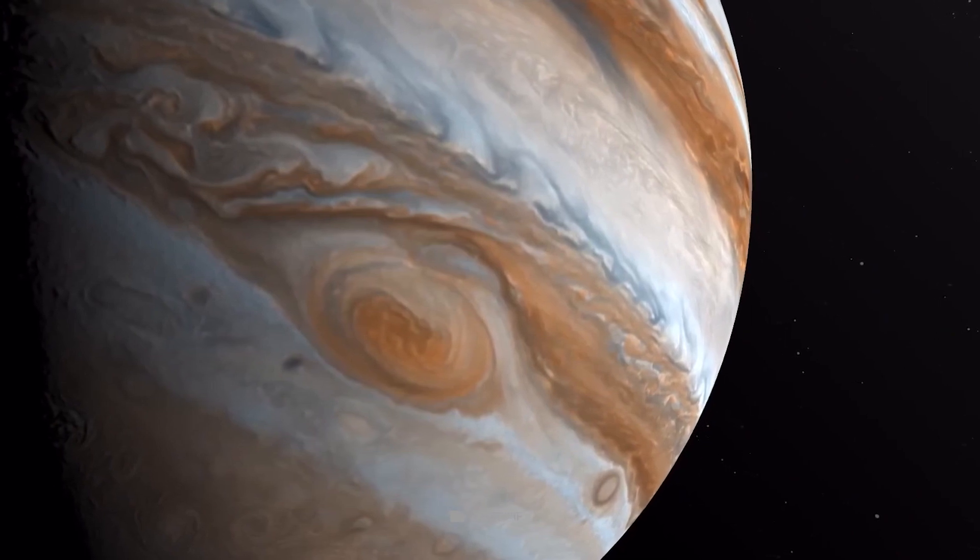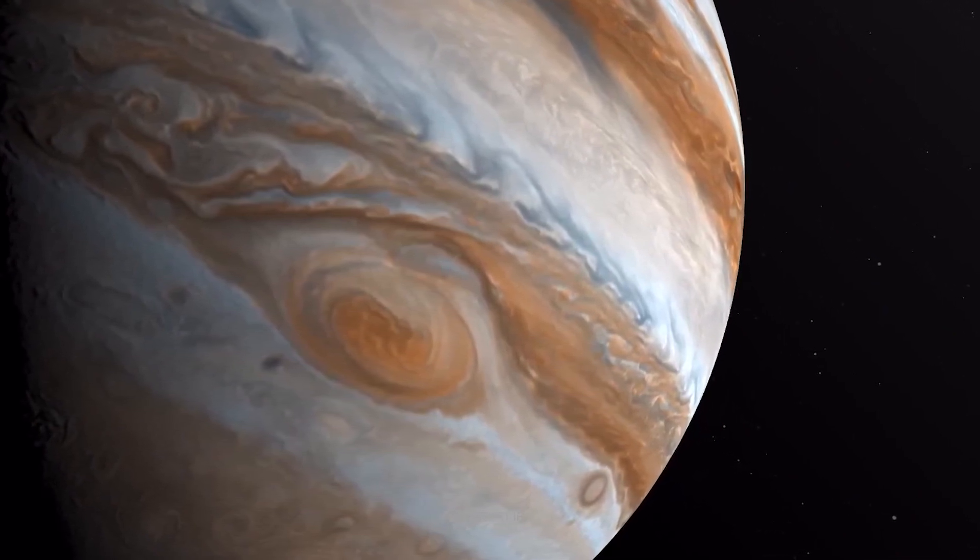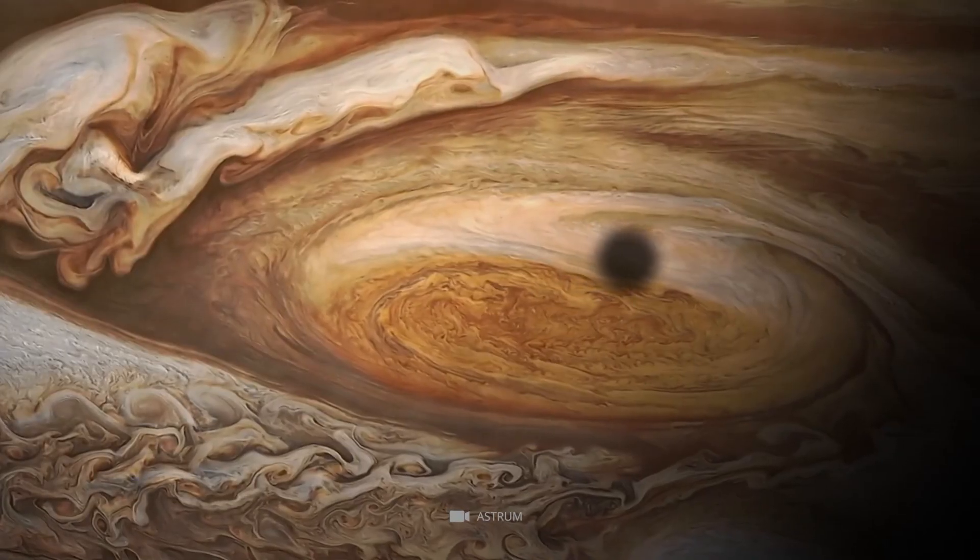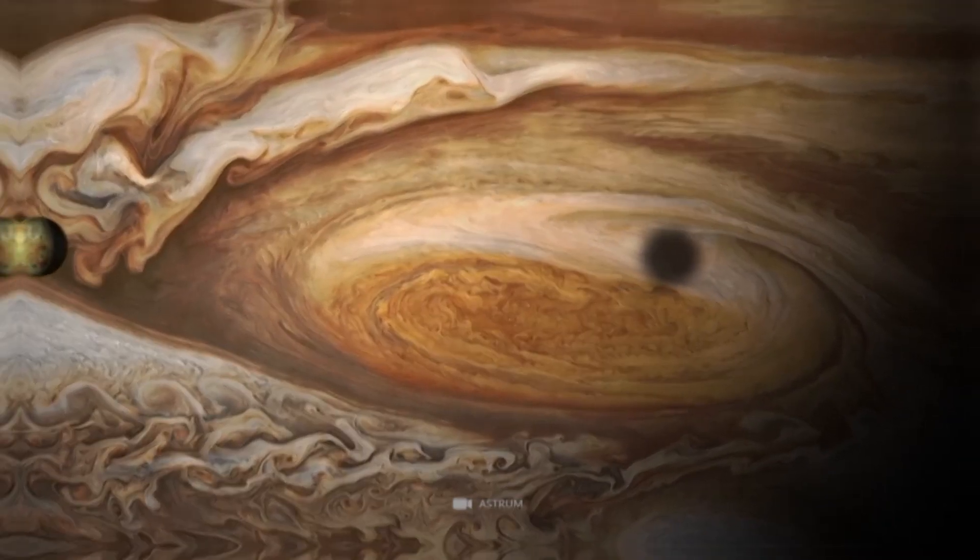The storm is an anticyclonic oval that measures about 20,000 miles in length and 10,000 miles in width, and is between 8,000 and 10,000 miles deep.